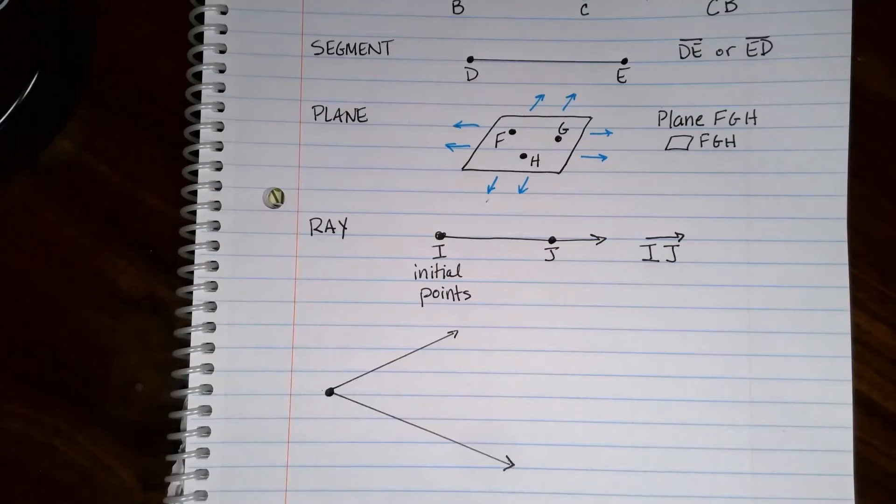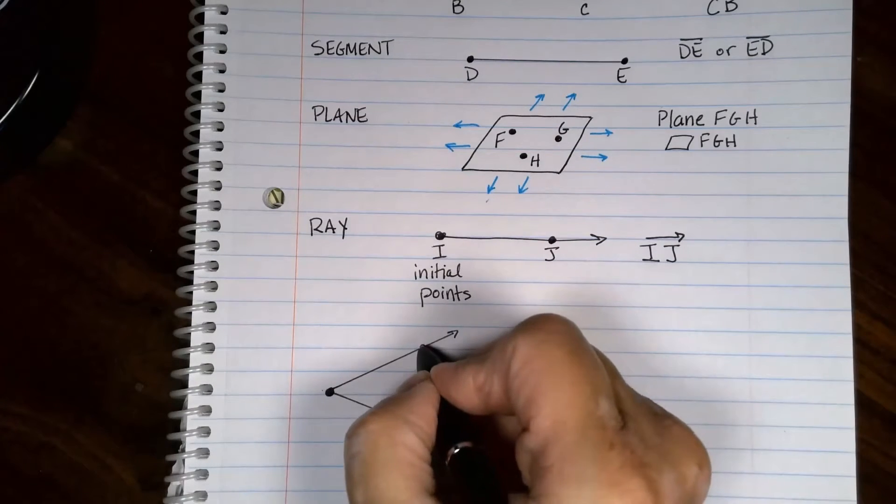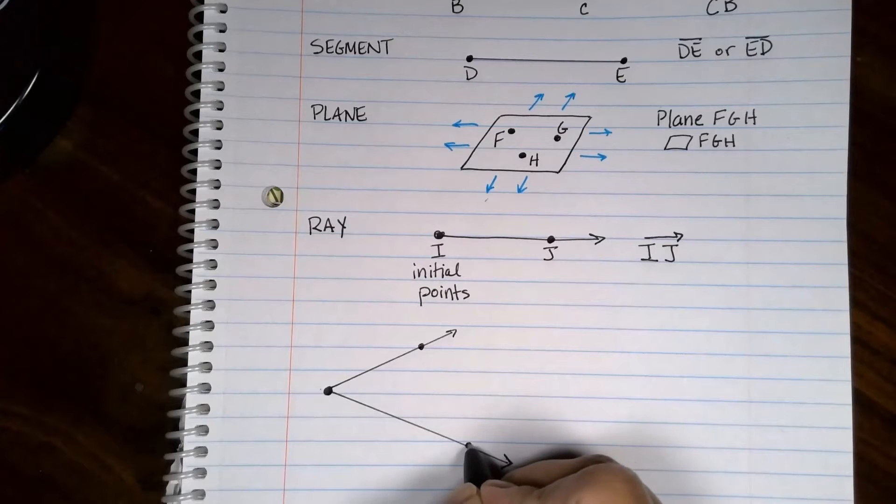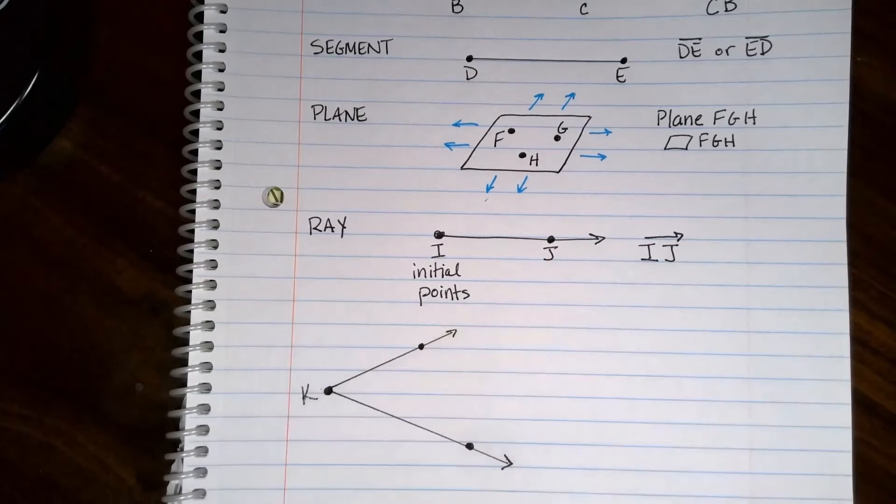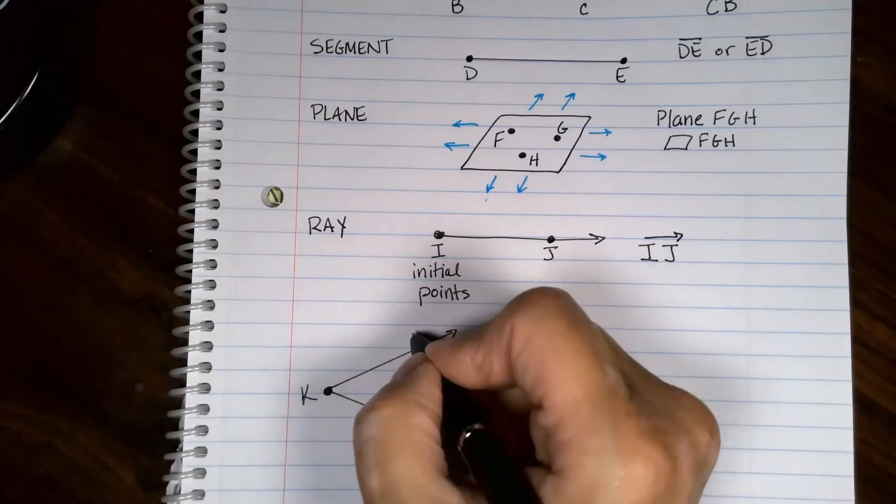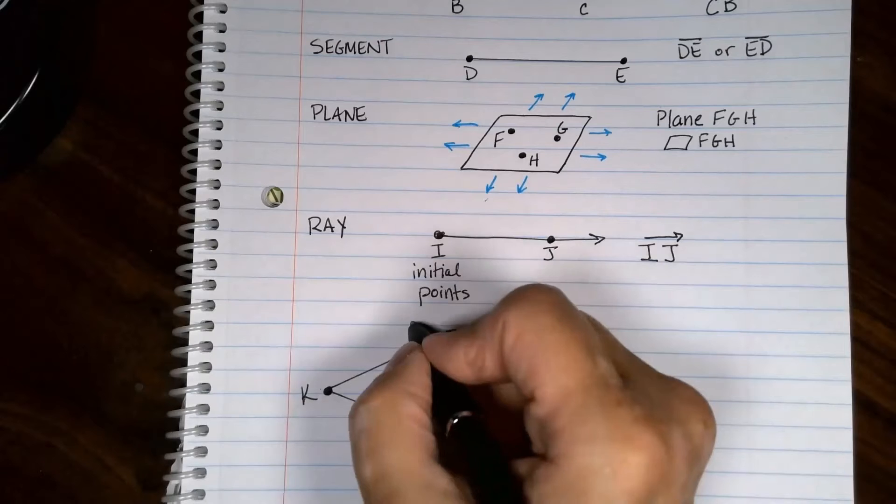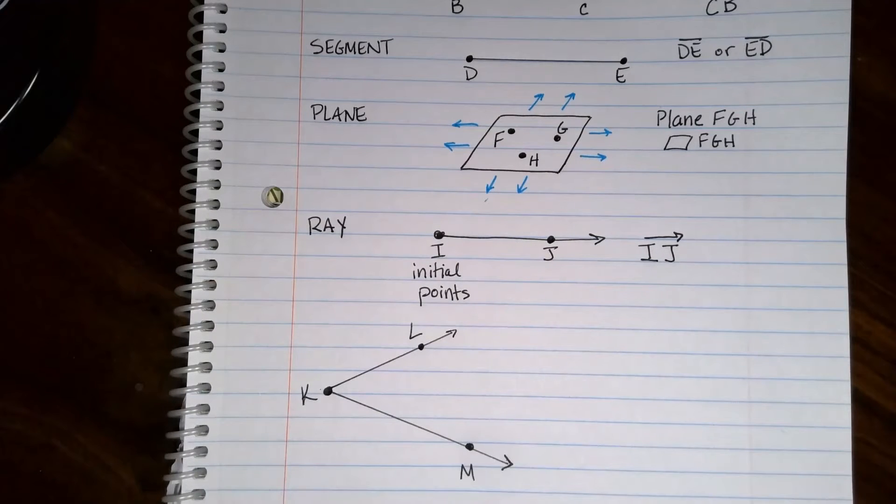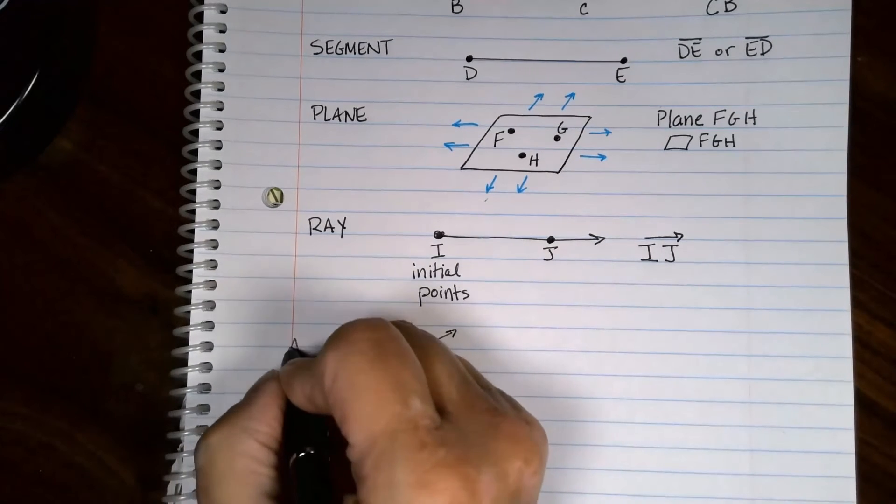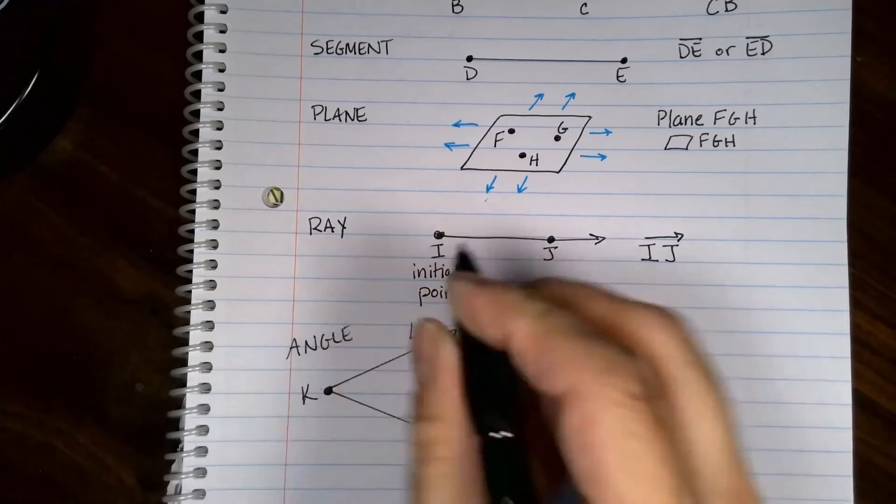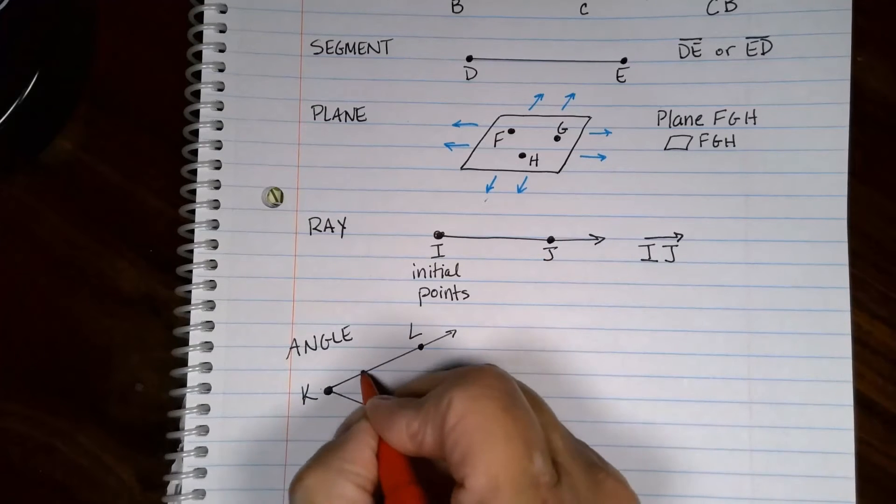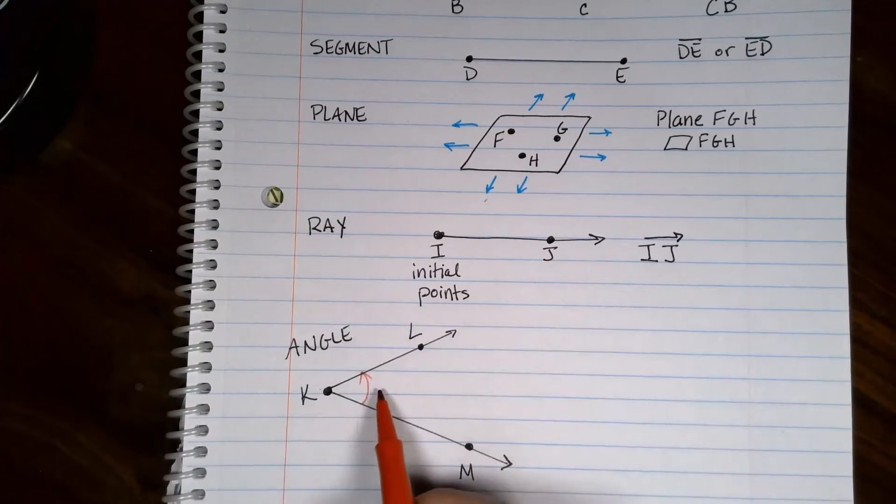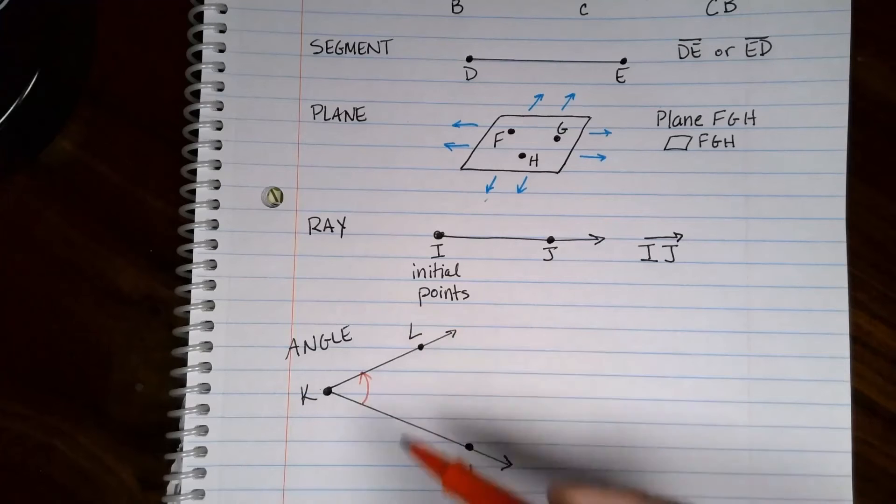Two rays that have the same initial point will look like this. Again, rays have to have another point that distinguishes them from one another. What do we have here? This one will be my starting initial point. This one H-I-J-K-L-M-N, and then what we have here is an angle. We'll talk about angles more when it's time to talk about angles, but really the angle is this little space and how wide apart these guys are. That's the angle.